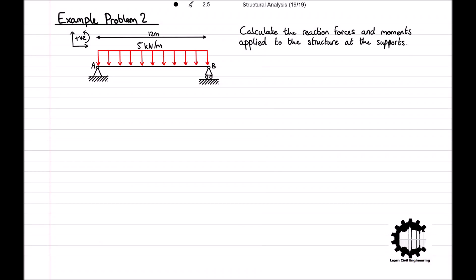Moving on to the next example, we have another structure supported by a hinge support at point A and a roller support at point B. For this example, we have a uniform load of 5kN per meter applied to the entire 12-meter-long structure. As in the first example, the supports result in reaction forces Rxa, RYA, and RYB being applied to the structure. When calculating reaction forces with distributed loads, we can treat the distributed load as a concentrated load, where the magnitude equals the total load over the area, applied at the centroid.